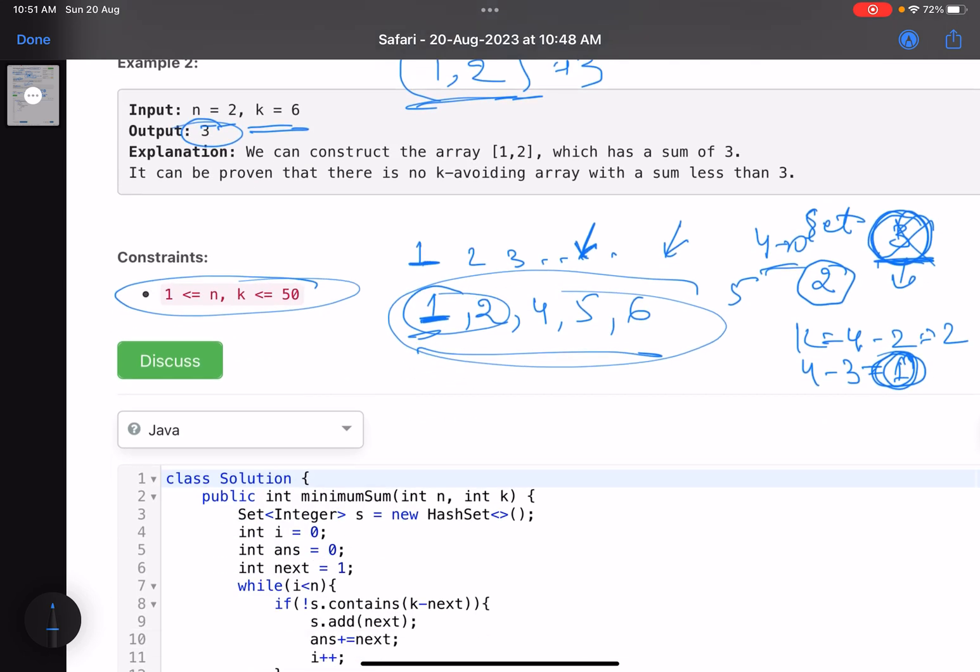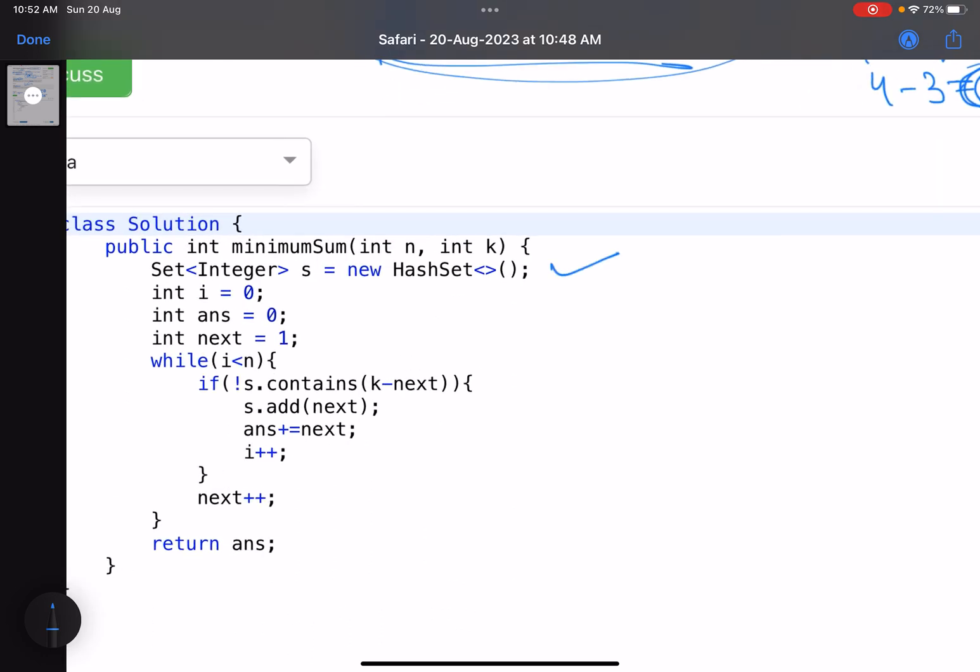That's what we have done here. We have taken a HashSet. i equals 0 keeps track of how many elements have I inserted because I need to insert n elements. Answer is basically the sum of elements. This value is the value that I'm trying to insert. While i is less than n, if the set does not contain k minus next - that means its corresponding pair is not present - add that to the set. Now since you have added this element, this will also be included in your sum, and i plus plus because now I have added one more element out of n elements.